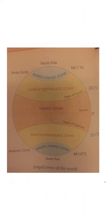Both the northern and southern frigid zones are far from the equator and receive the slanting rays of the sun. In summer, the sunlight is so weak that it is not enough to warm the land.